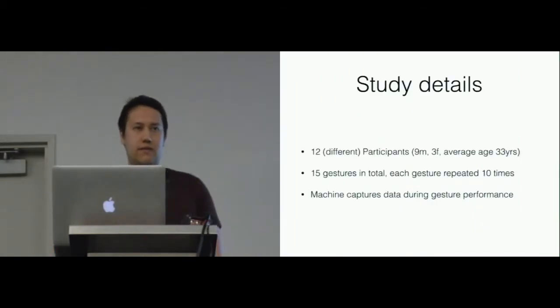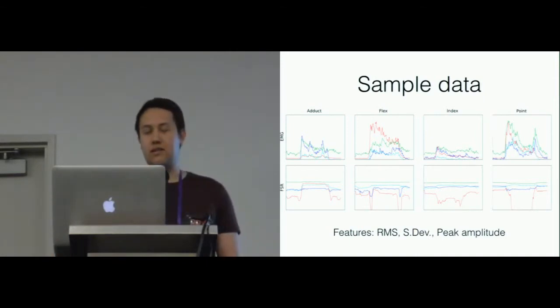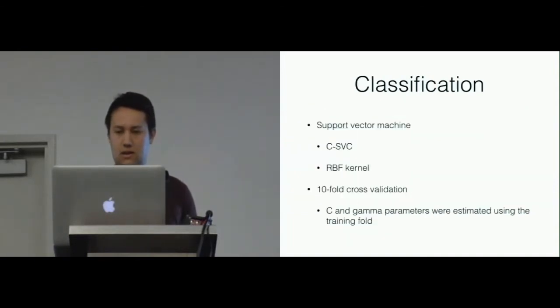Our main study had twelve different participants. Each of those fifteen gestures were performed ten times each, and as the gesture was performed, the machine captures this data. This is what the data looks like—we have EMG on the top and pressure sensors on the bottom. From this signal, we extracted several different 1D time series features, such as the RMS, the standard deviation, and the peak amplitude. Then using these features, we trained a machine learning classifier. We used an SVM with an RBF kernel, and we used the ten-fold cross-validation technique in order to assess the accuracy of the classification.